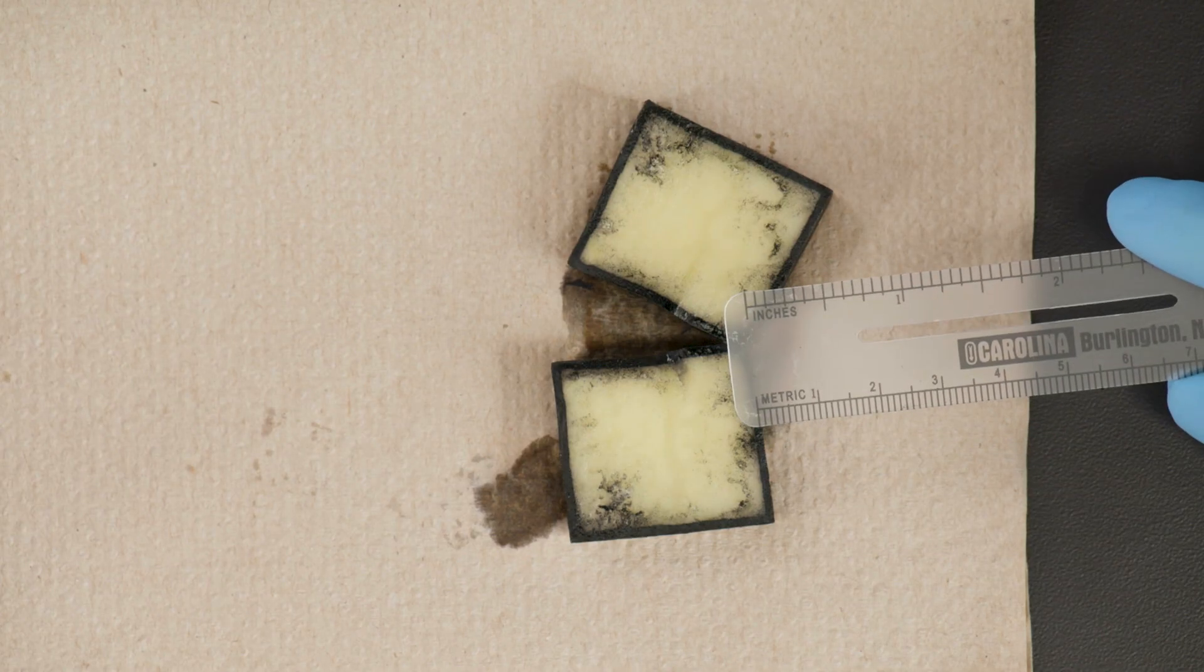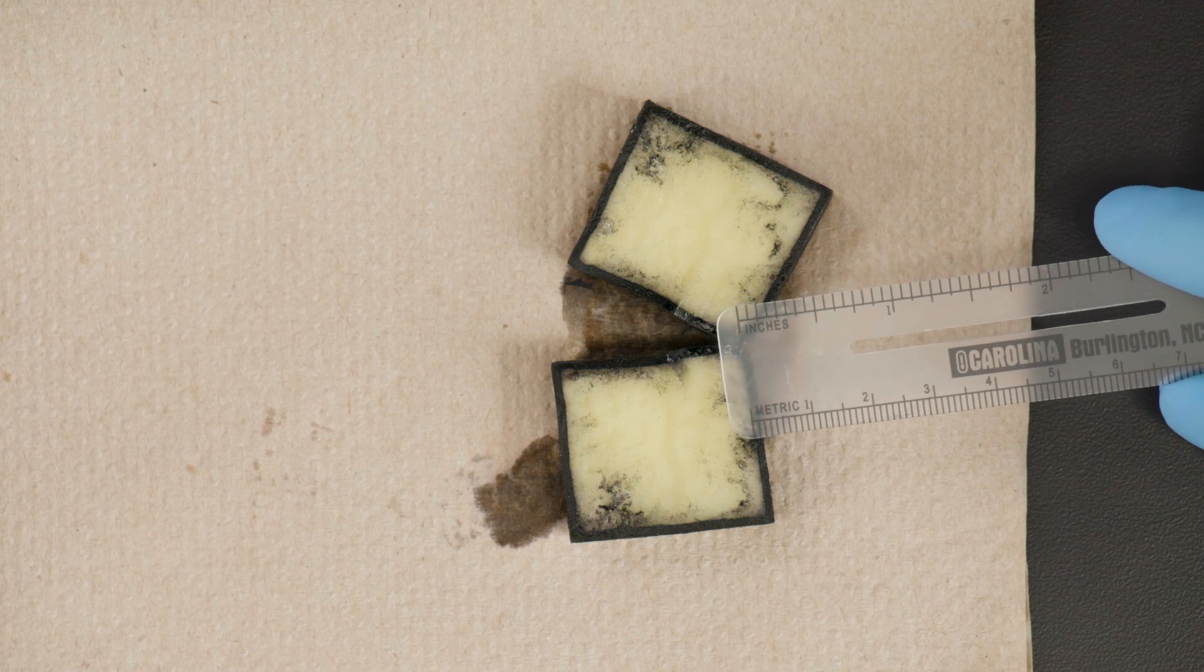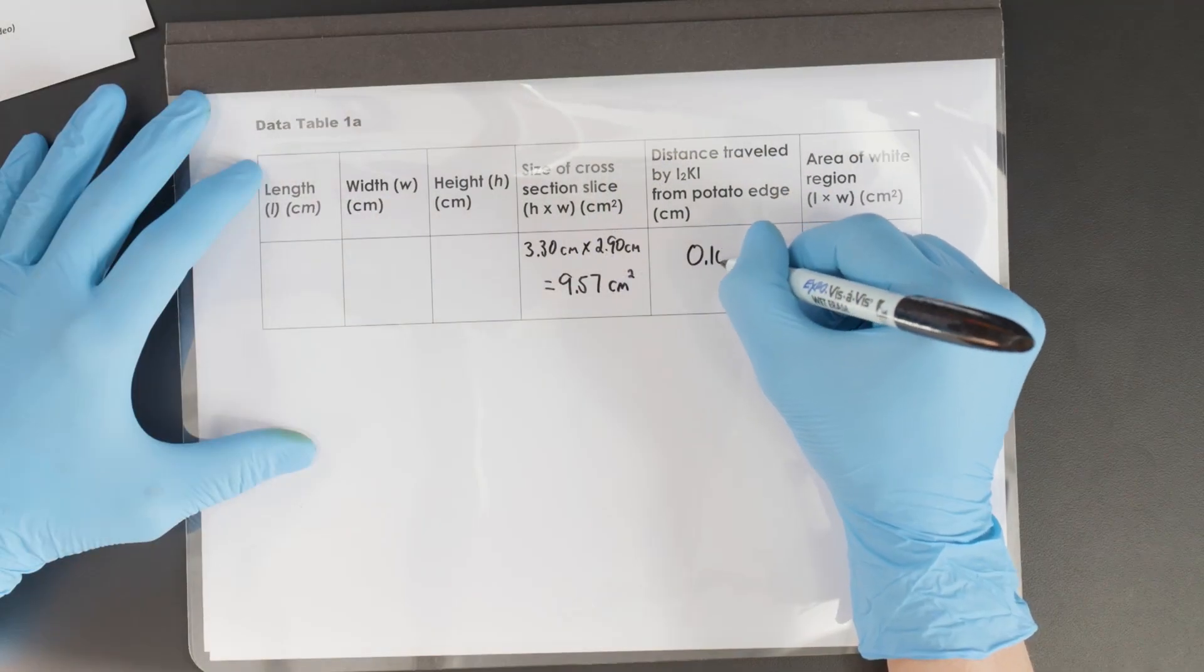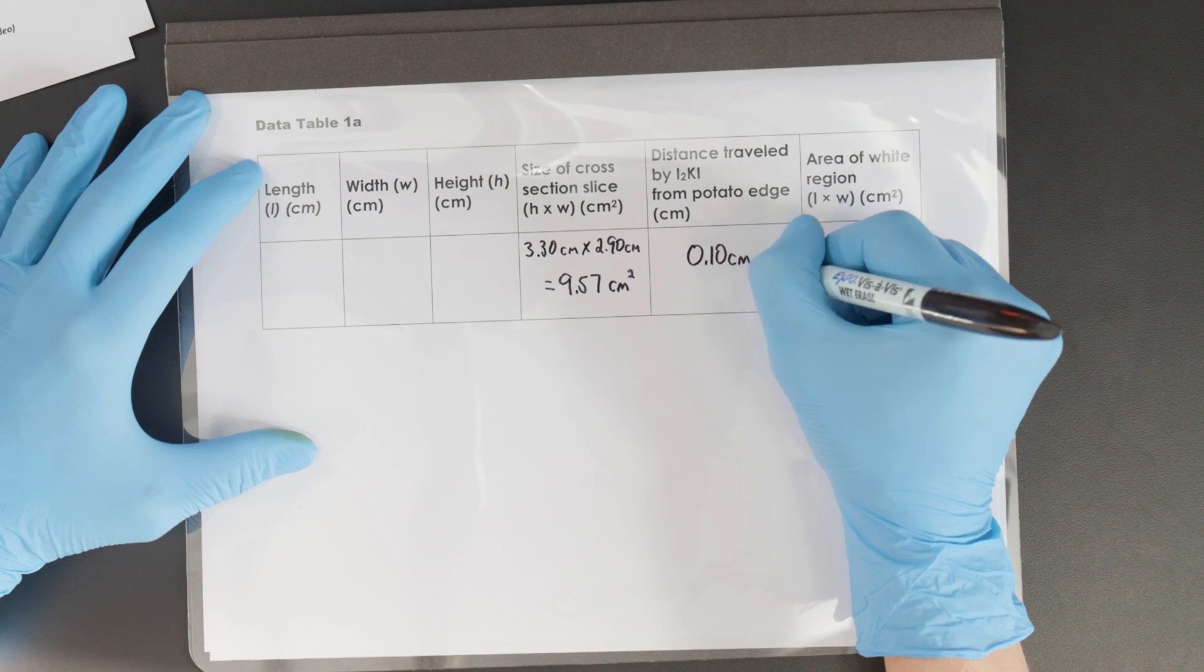The next measurement is the distance penetrated by the black iodine solution. Record this measurement in centimeters in data table 1A.